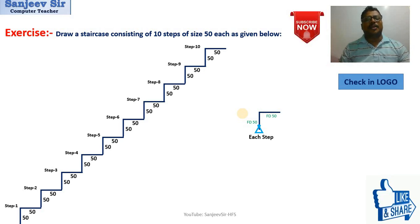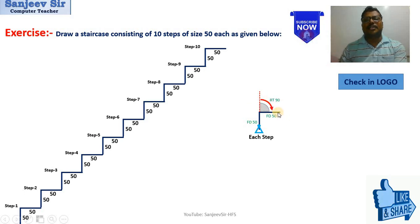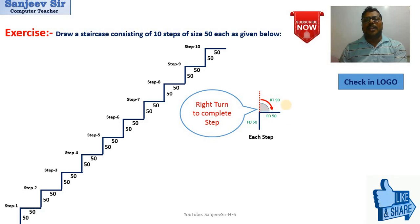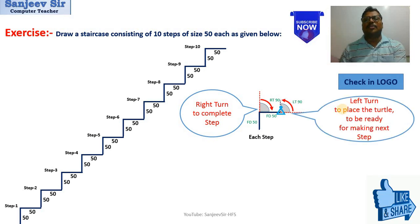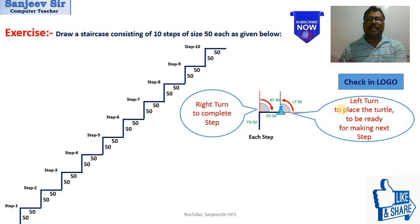The key understanding is that each step repeats 10 times. After drawing a 50-unit line, the turtle will not go in the red direction — it will right turn 90 degrees and go forward 50. In this way, the turtle completes the first step. After the right turn, one step is completed, and then the turtle will turn left 90 degrees (LT 90) to be ready for the next step.